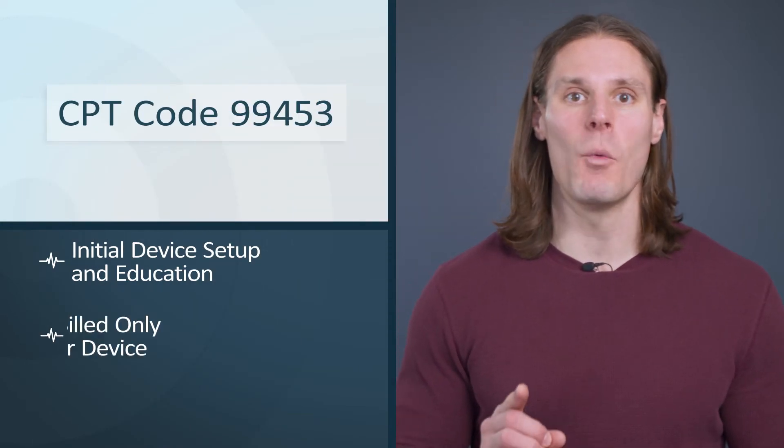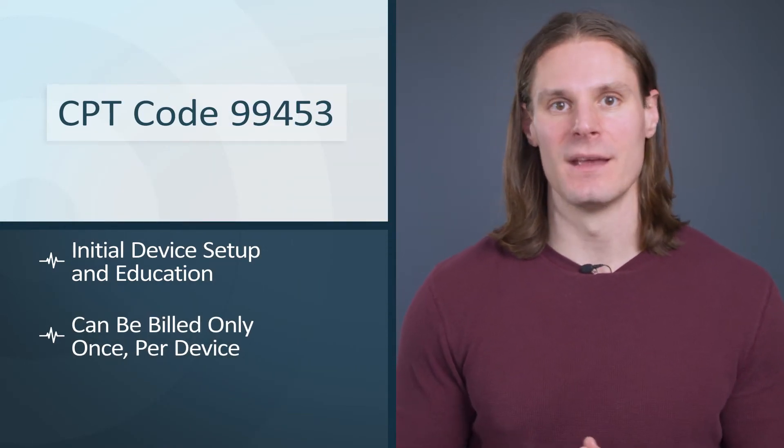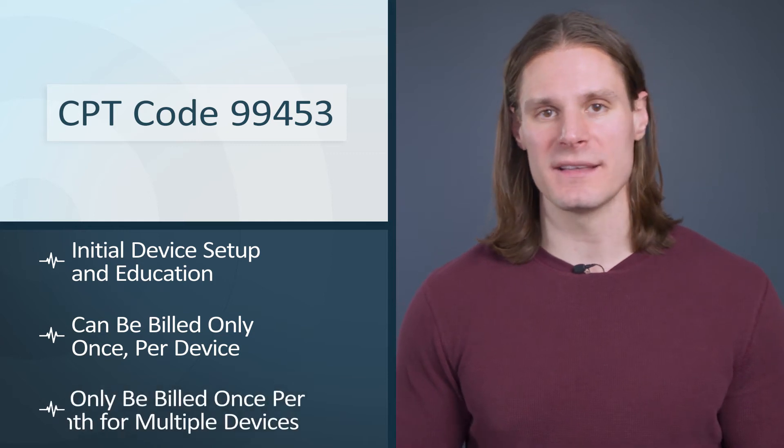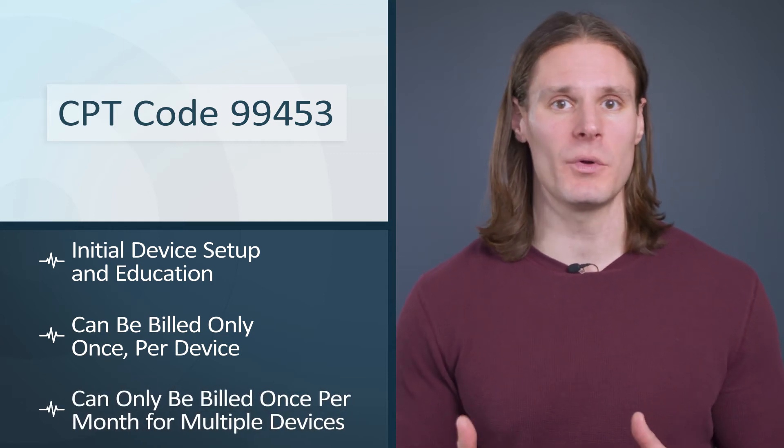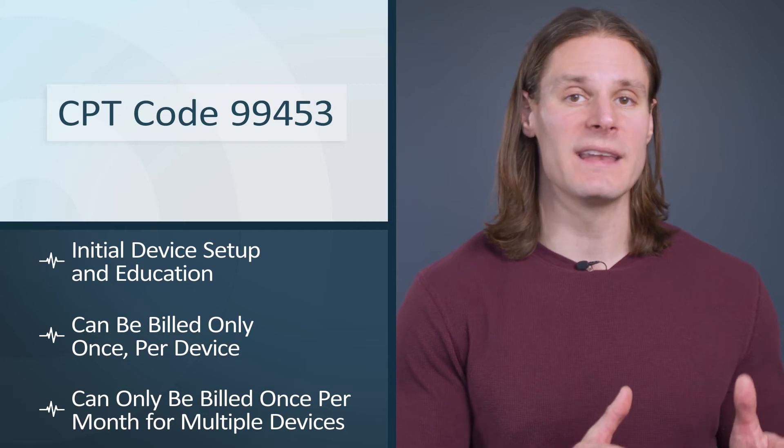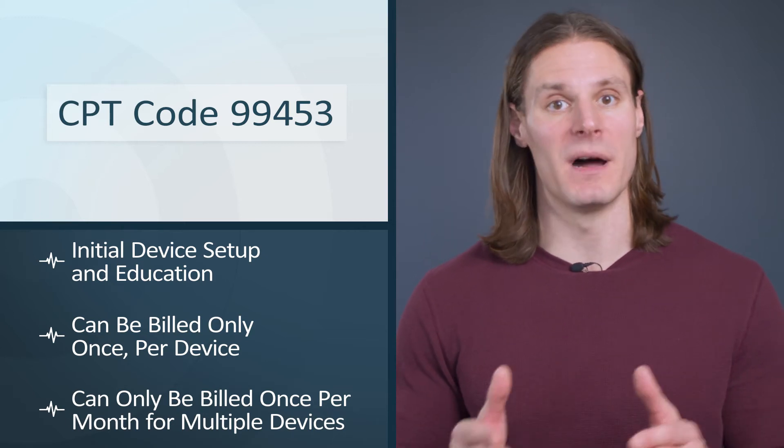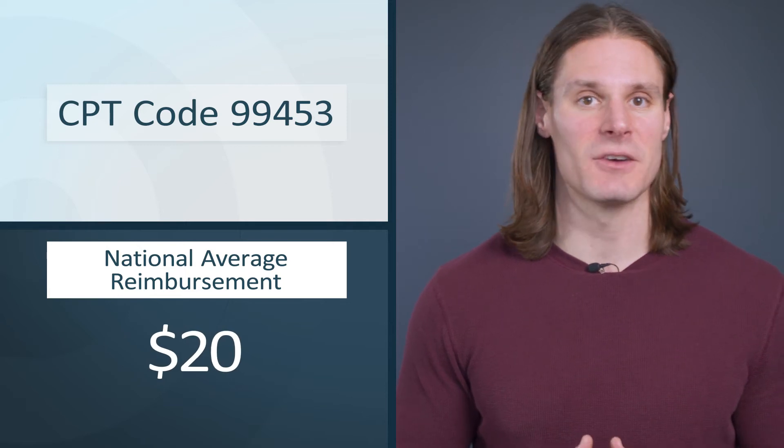99453 is a one-time code per device and can only be billed once a month. So if you're giving your patient multiple devices, make sure you break up billing 99453 from month to month. For example, if you give the patient both a weight scale and a glucometer in January, you can only bill one 99453 code for January and will need to wait until February to bill for the other. The current average reimbursement for 99453 is around $20.